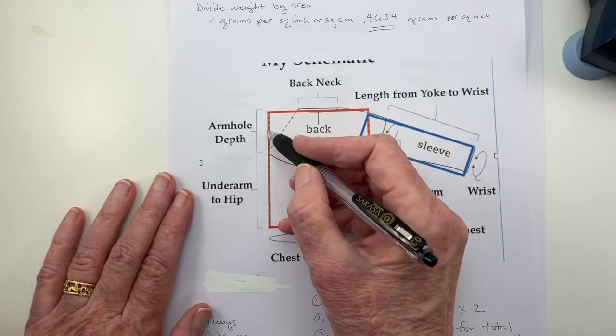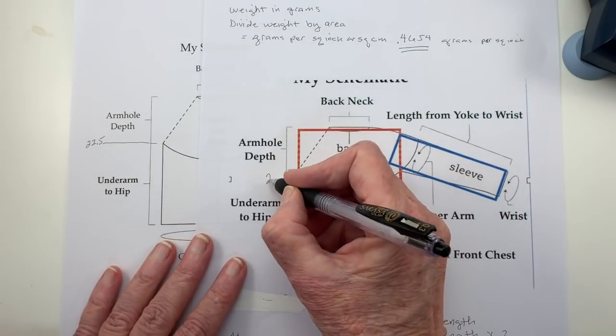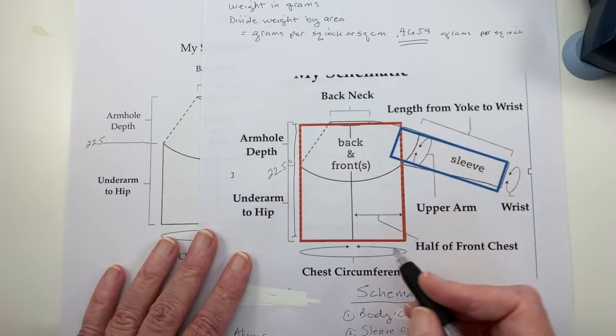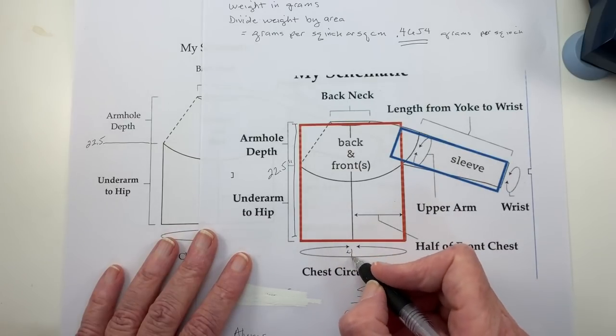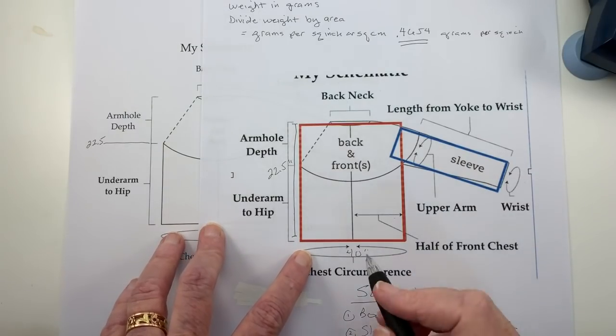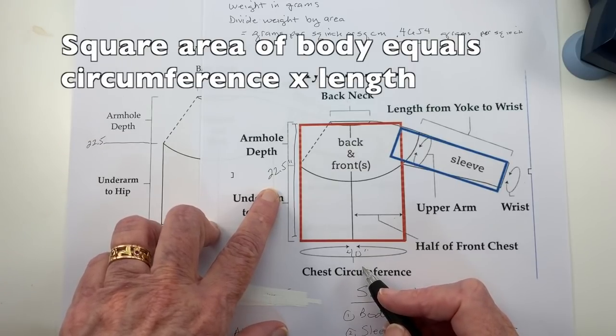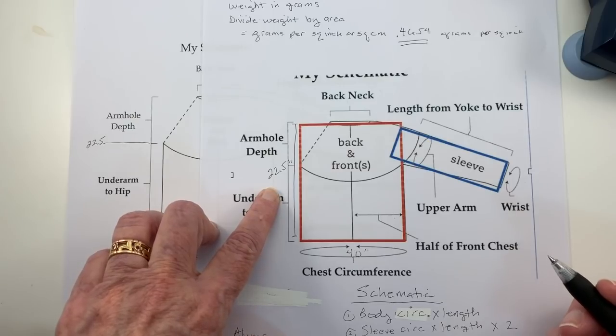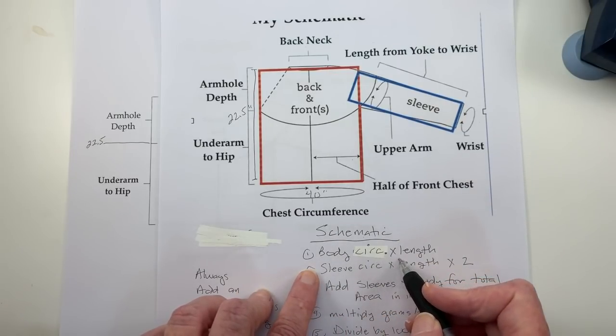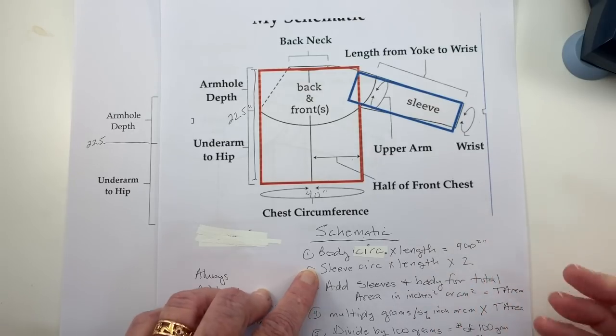And I know that this length right here is going to be 22.5 inches from here to here. And I know that my circumference is 40 inches. So I can figure out the square inches of the body very easily just by multiplying 40 inches by 22.5. And that gives me actually 900 square inches. I have that as step one here. Body circumference times the length, and that equals 900 square inches for me.